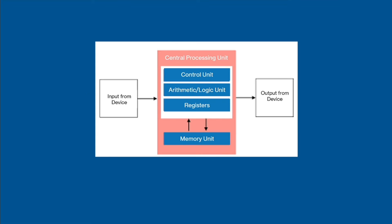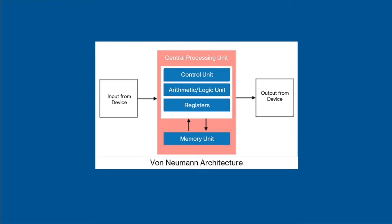The diagram I'm showing you here shows a computer, with the pink box being the CPU. This is the typical setup of a computer and is known as the von Neumann architecture. The main parts of the CPU are shown here, and I'm going to be talking you through the roles of each of them.